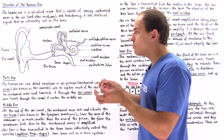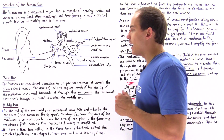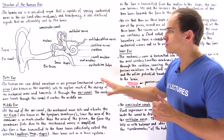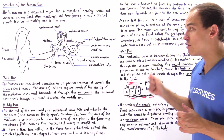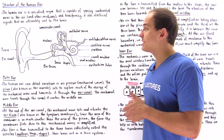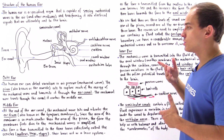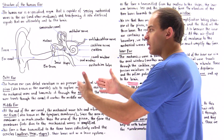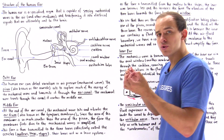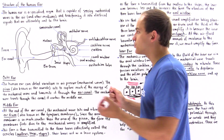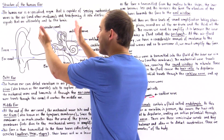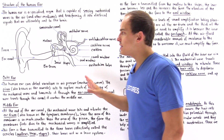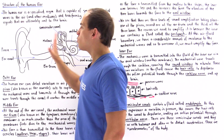Let's discuss how the mechanical wave actually propagates through the ear — the structures of the ear and how the ear transforms the mechanical wave into electrical signals. The ear can be broken down into three sections: we have the outer ear, we have the middle ear, and we have the inner ear. Let's begin with the outer ear.